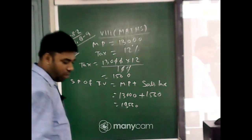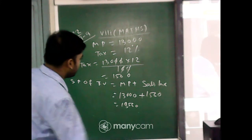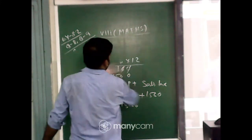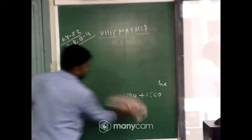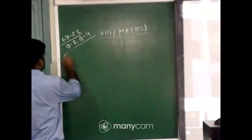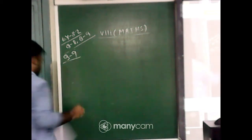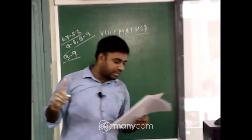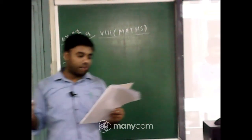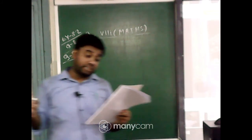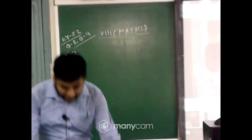Question number 9: Arun bought a pair of skates at a sale where the discount is given 20 percent. If the amount he pays is 1,600, find the mark price.